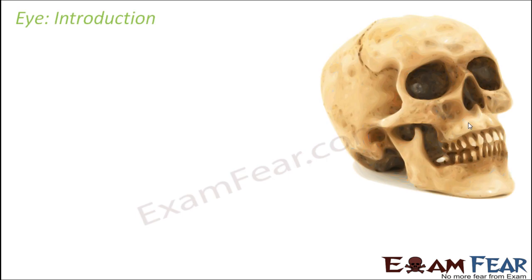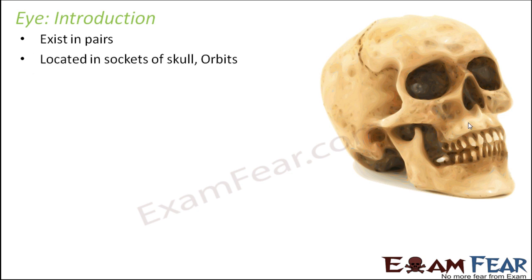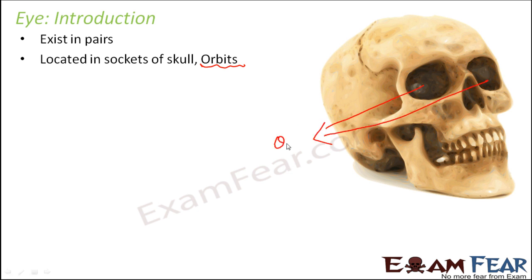So where is the eye located? Eyes exist in pairs — we have two eyes. They are located in the sockets of the skull which are called orbits. So if you look at a skull, you have two sockets, and these sockets where the eyes are located are known as orbits. Your eyes are placed inside these sockets.